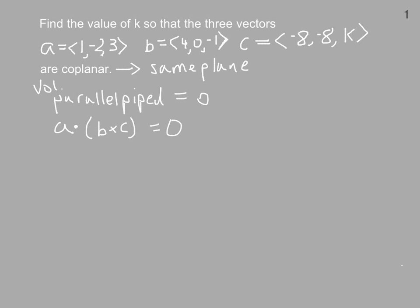We also saw that there's a shortcut to calculate this number by treating it as a determinant with the first row as a's components, the second row as b's components, and the third row as c's components.